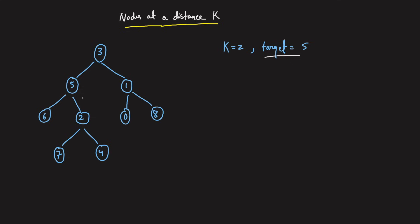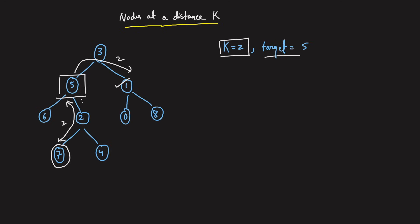This is the binary tree that is given to you and the target node is 5. The distance is given as 2, so I want you to print all the nodes that are at a distance of 2. From node 5 at distance 2, we get one node, then another node, and another node. Hence the 3 nodes that are at a distance of 2 are 7, 4, and 1. You can print them in any order.